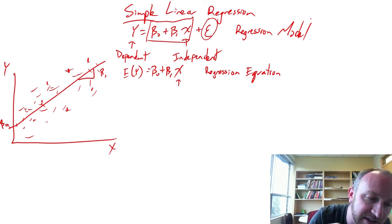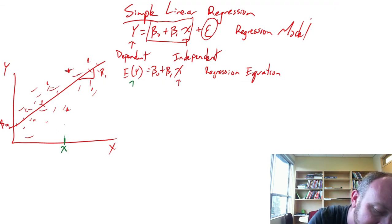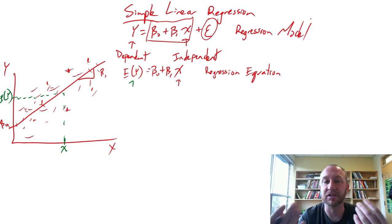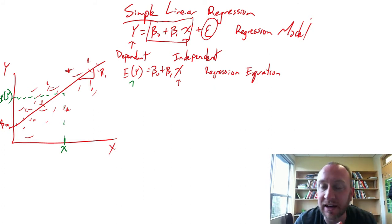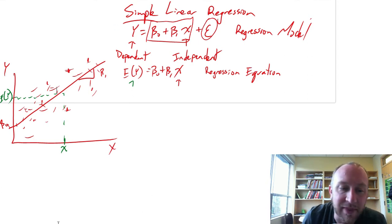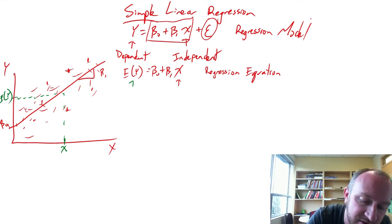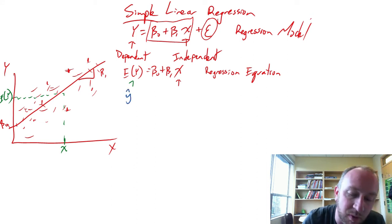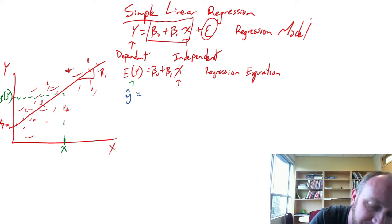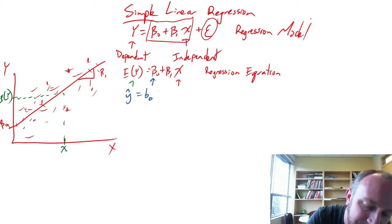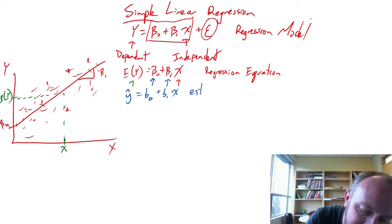You can give me some value for x, and given that value for x, it corresponds to some average value for y. This is the equation we want to estimate. We're going to estimate the expected value of y with y-hat, beta-0 with b0, and beta-1 with b1. This is our estimated regression equation.